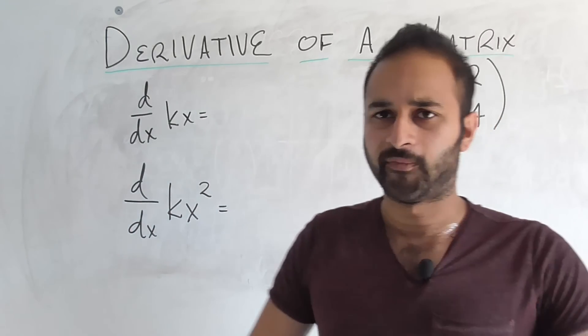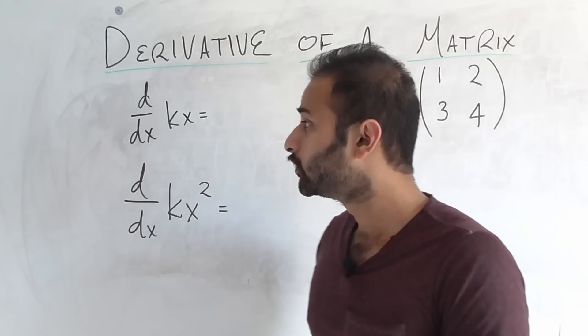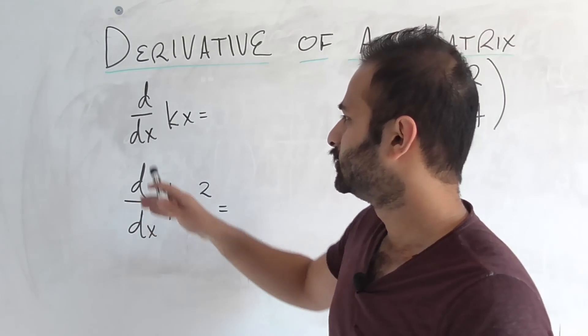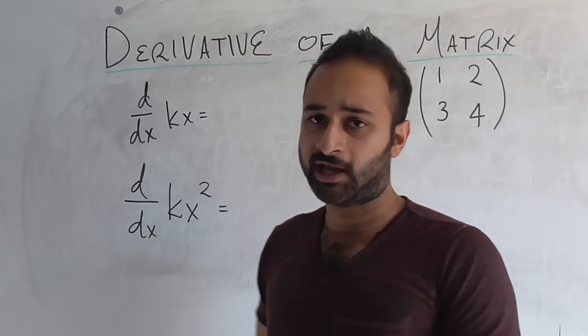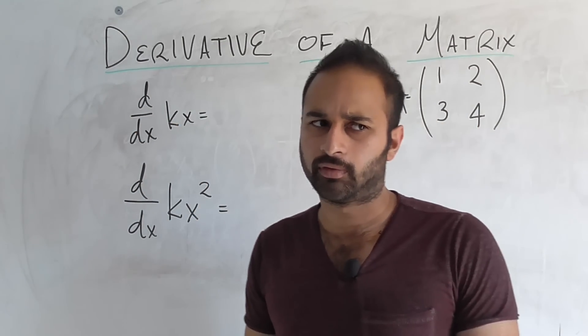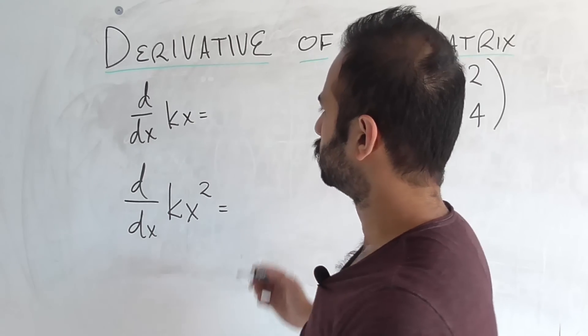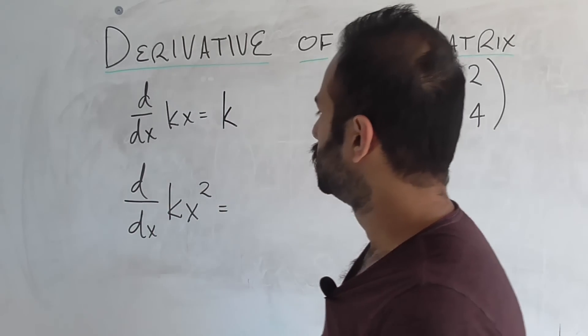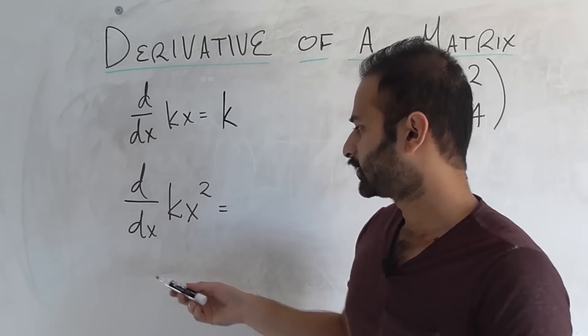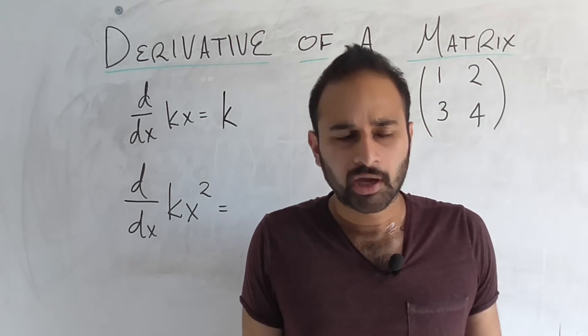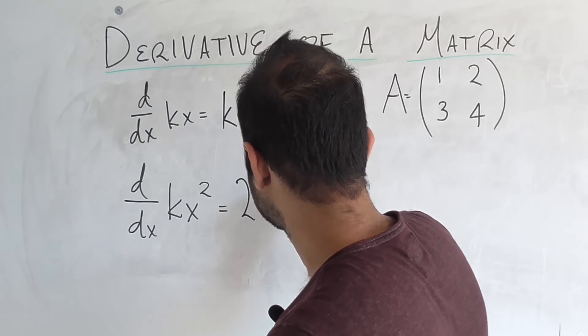Before we get into the derivative of a matrix, let's go into some familiar territory. What is the derivative d/dx of the function kx, where k is a constant? A lot of you would probably find this pretty trivial. You would just say this is k, right? Okay, so what's the derivative d/dx of kx squared? This is still pretty trivial. It's just 2kx.